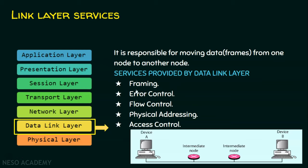And the various services offered by data link layer are framing, error control, flow control, physical addressing, and access control. Already we have seen framing and error control. In error control, we have seen about error detection techniques. And flow control is the topic of the day.